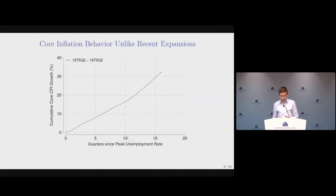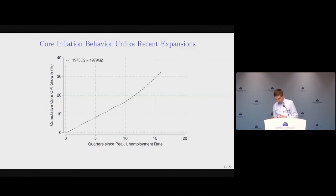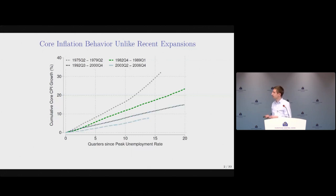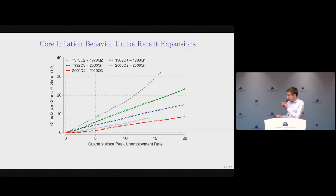This behavior of inflation in the current expansion has been very different from inflation behavior in other more recent expansions, as the following diagrams make clear. Here we are plotting the growth of core CPI over the course of an expansion, with the number of quarters past since unemployment peaked on the x-axis. In the 1970s expansion, core CPI grew by about 17 percent after 10 quarters. In subsequent expansions, prices grew slower and slower — the 80s, 90s, early 2000s, and the 2009 expansion where core CPI had grown by just about 5 percent after 10 quarters. The current expansion is very different, with price growth tracking more like the 80s expansion.